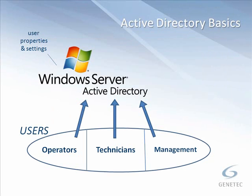Within Active Directory we can set up user groups and users assigned to those groups. Usually the groups are based on the roles or security settings of the users — for example, users divided into groups called operators, technicians, and management. Once a user has been assigned to a group, you just need to maintain the properties and settings of the group instead of each individual user account. When we create a new group, we can assign security, permissions, and privileges, and then start adding users. By default, new users are added to the domain users group.